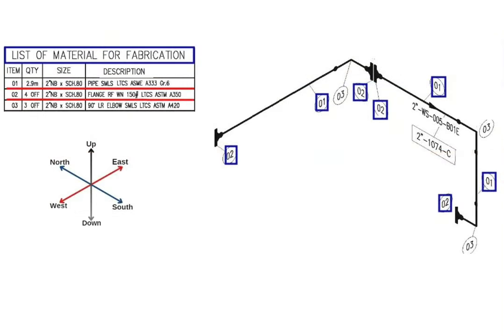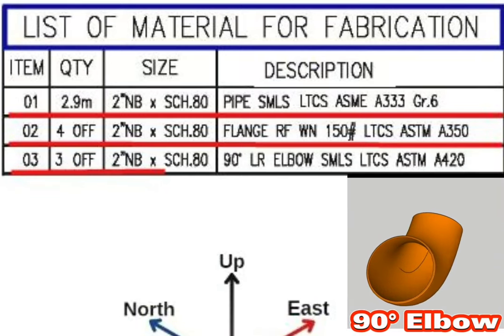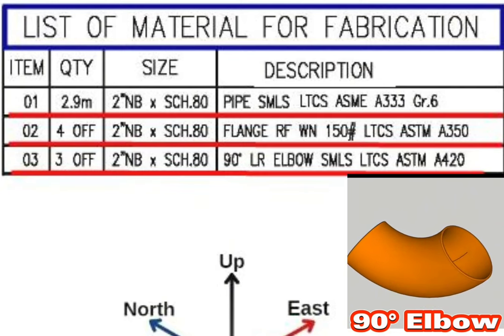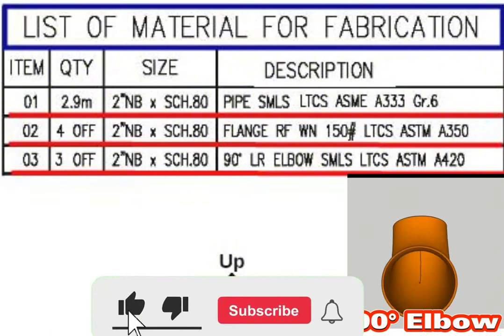Detail number 3 was used in 3 places in the pipe isometric. Let's look at the material list. Item number 3: seamless type, low temperature carbon steel material, ASTM A420.